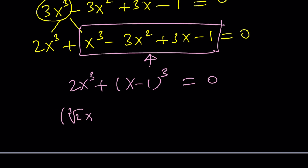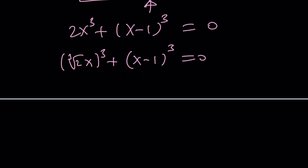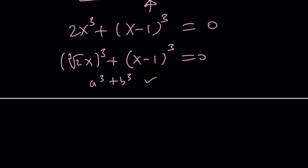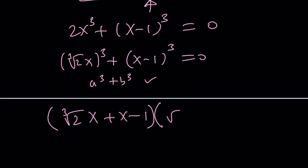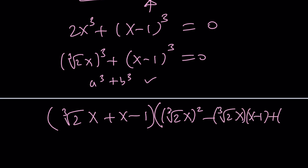The cube root of 2x to the third plus x minus 1 to the third equals 0. The cool thing is I can expand a cubed plus b cubed — note this is a different a and b from the first method. It can be written as the cube root of 2x plus x minus 1 as one factor. The other factor is a squared times the cube root of 2 times x squared, minus a times b.